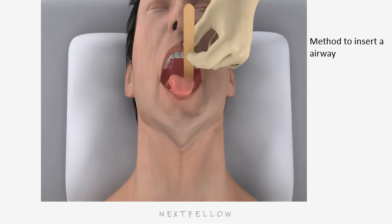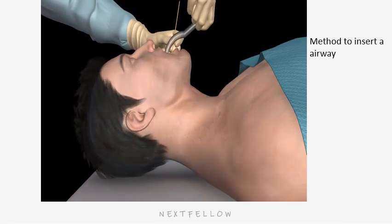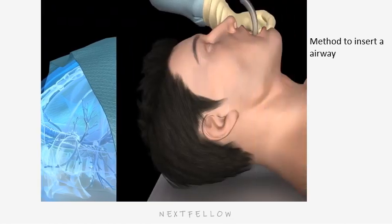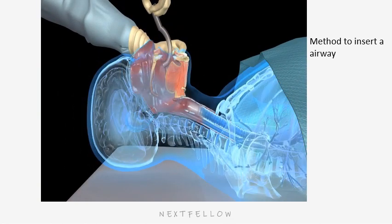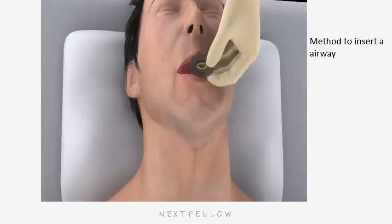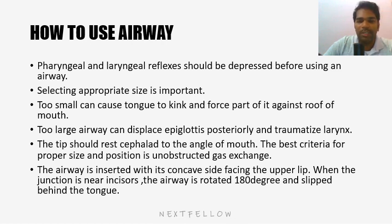Oral airway insertion: insert the oral airway in an unconscious patient who has no gag reflex. If possible, use a tongue blade to depress and displace the tongue away from the roof of the mouth, then insert the airway following the curvature of the tongue into the oropharynx. An alternate approach is to insert the airway upside down; as the tip reaches the posterior pharyngeal wall, rotate it 180 degrees into the proper position. A too-small airway causes kinking of the tongue; a too-large airway can displace the epiglottis posteriorly and traumatize the larynx.